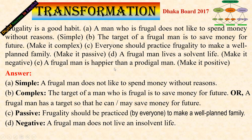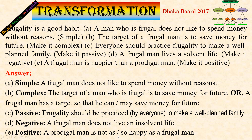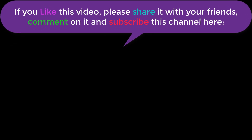Number E: a frugal man is happier than a prodigal man — make it positive. A prodigal man is not so happy as a frugal man.